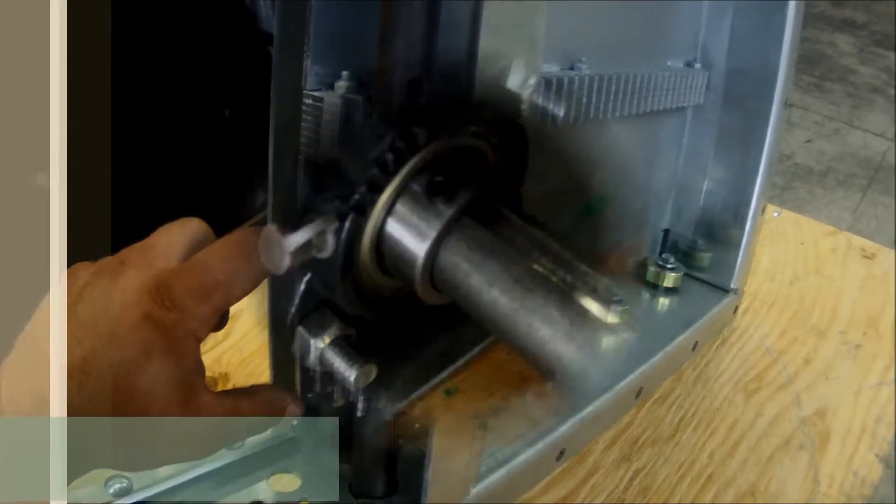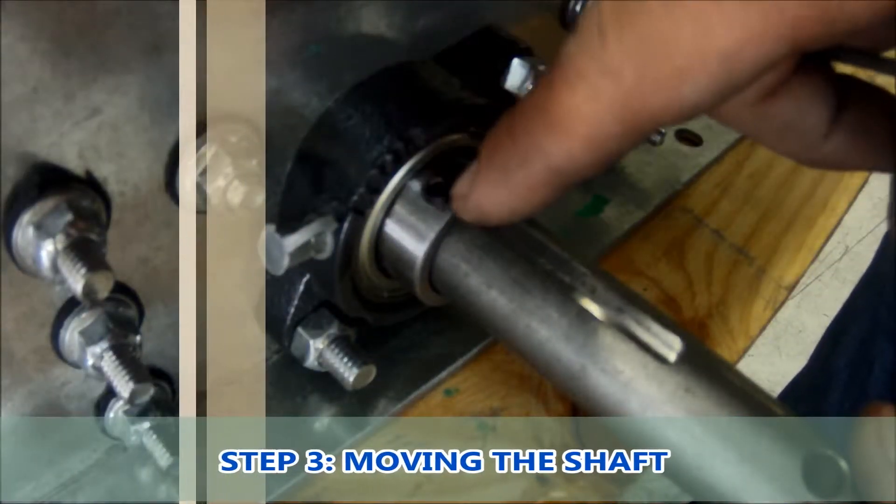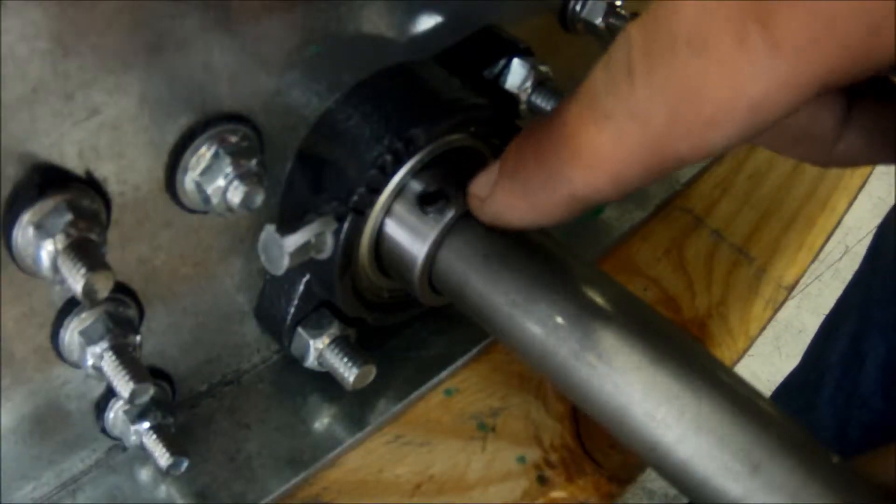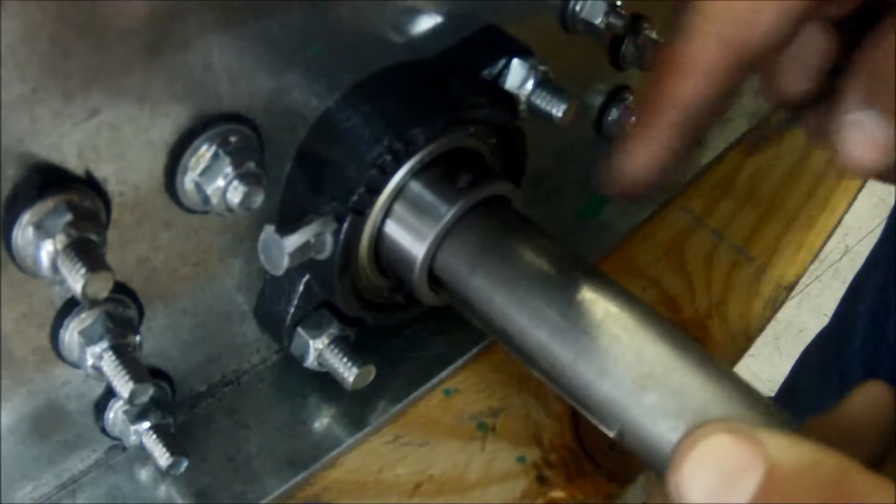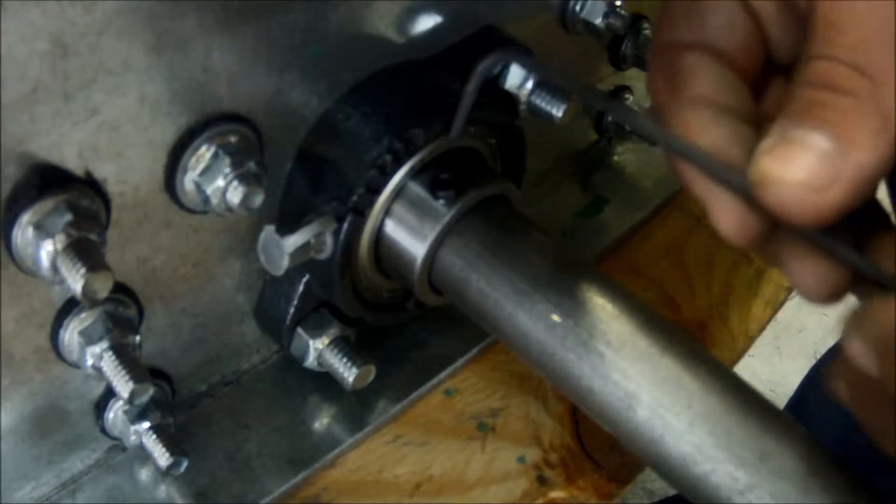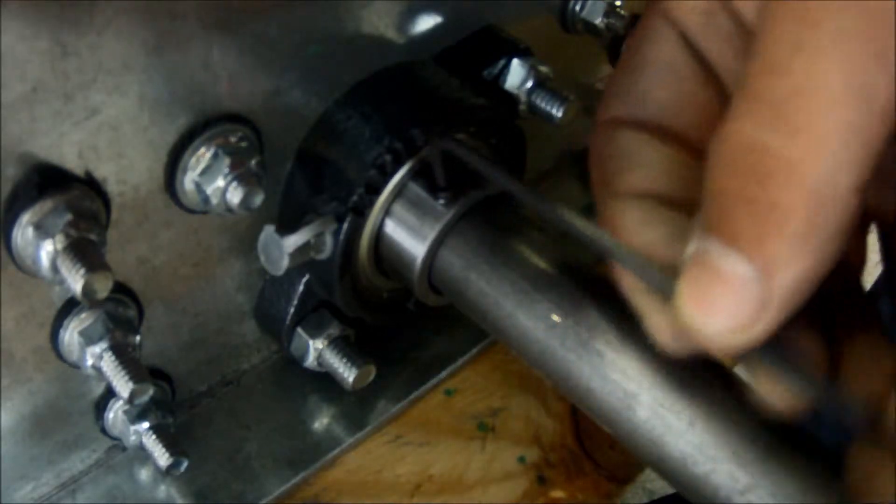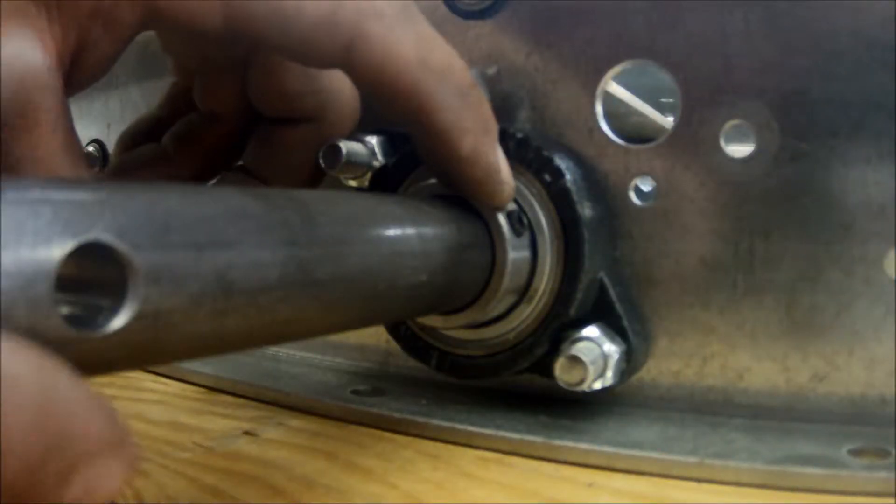But before we move the shaft, we must loosen the two 3mm Allen bolts. Do this on both bearings on either side of the gate.